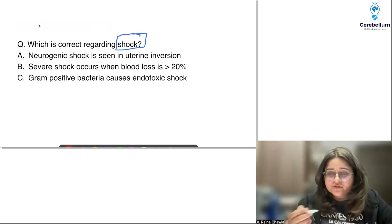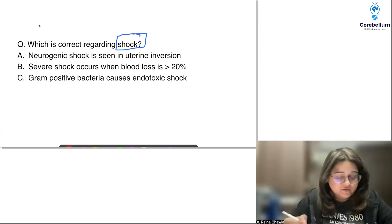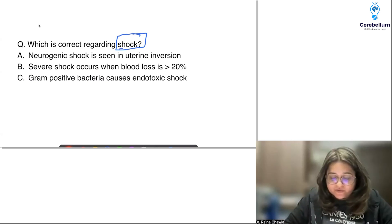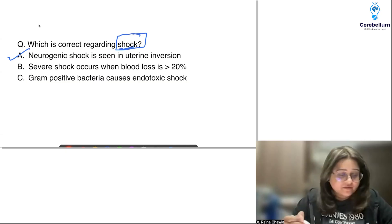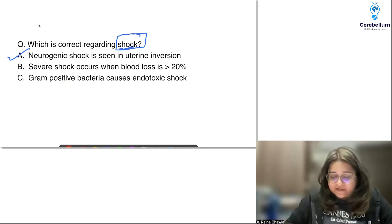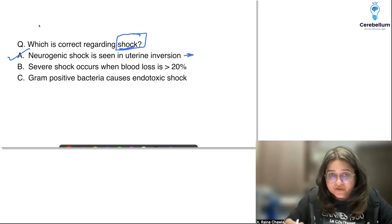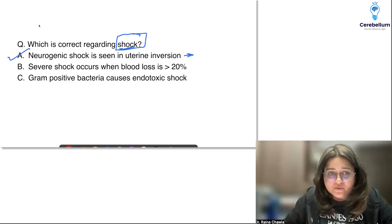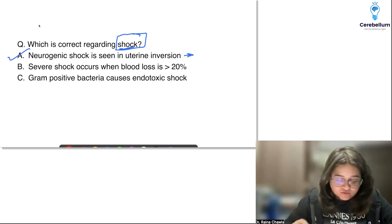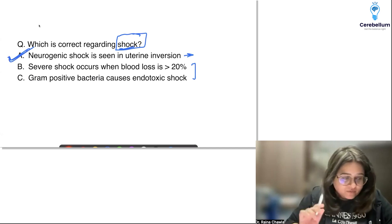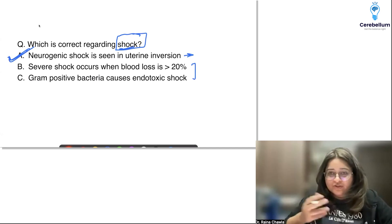There was a question — not really an obs and gynae question, more medicine or pathology — on different types of shock. One of the options was relevant: uterine inversion causes neurogenic shock, and that was the correct option. Other options: severe shock is when blood loss is more than 30–40%, and gram-negative bacteria cause endotoxic shock. The obs and gynae-relevant answer was definitely neurogenic shock from uterine inversion.